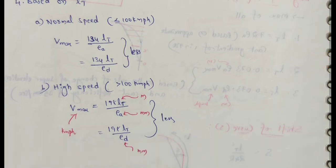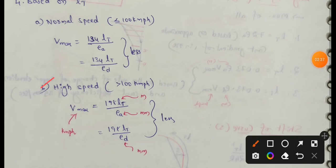Fourth one for high speed: high speed means greater than 100 km/h. Here, based on the length of transition curve, maximum speed is equal to 198 into length of transition curve divided by Ea, where Ea means actual super elevation.